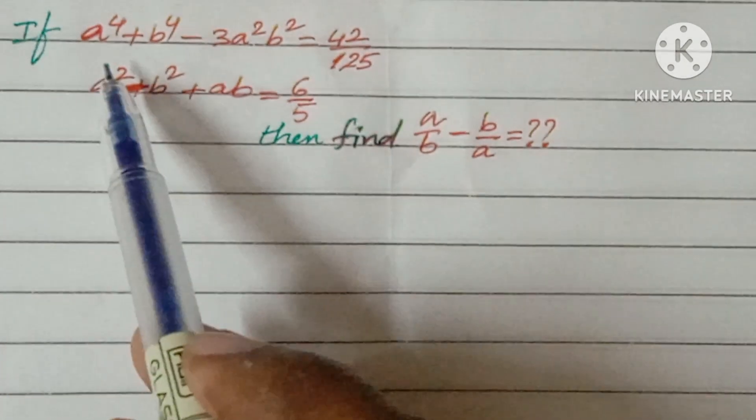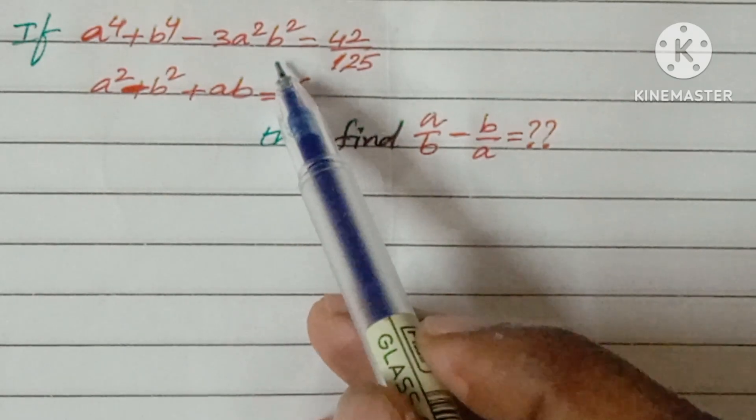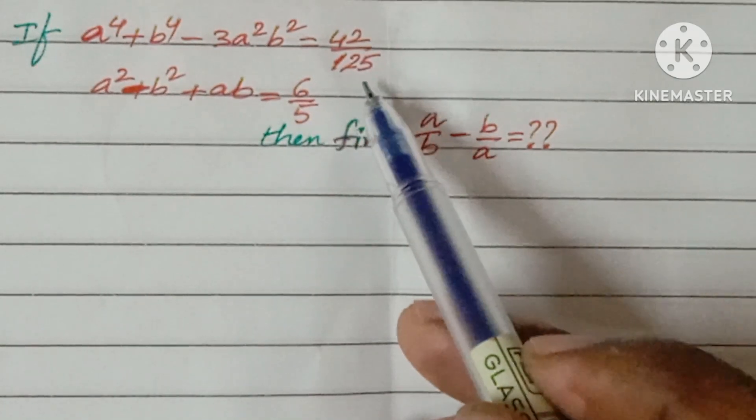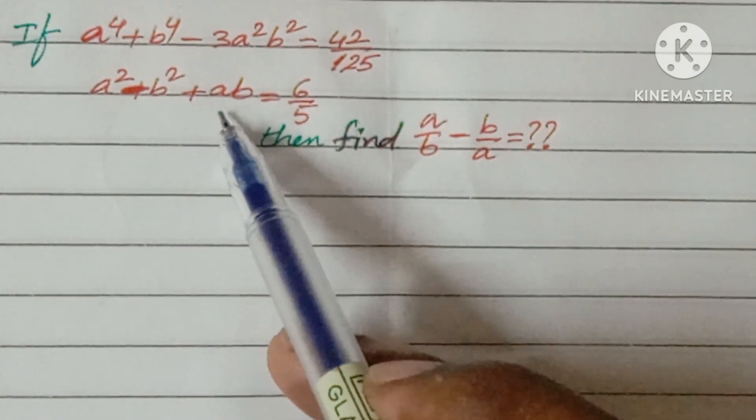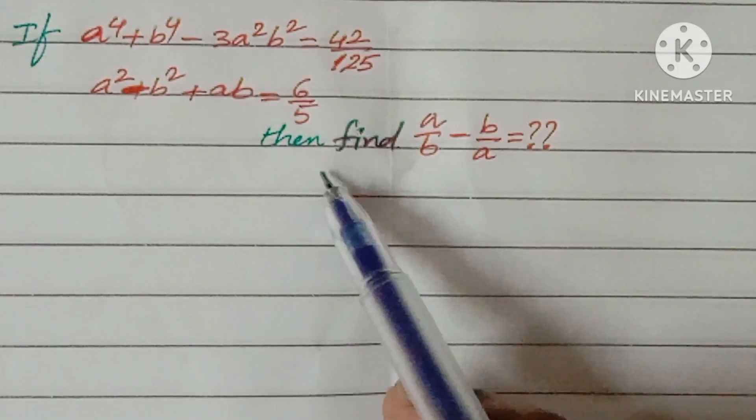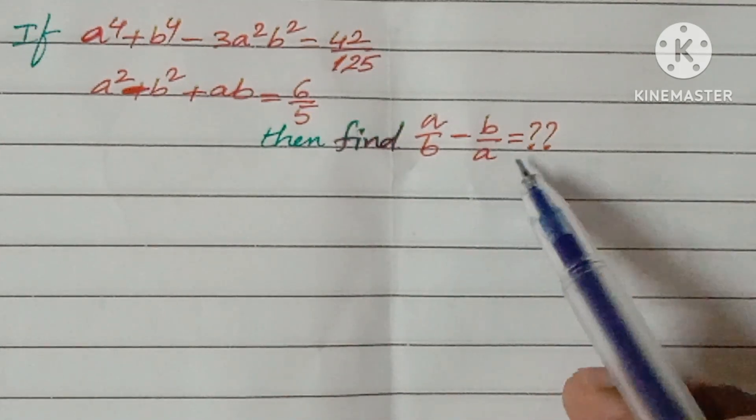The question is given: a^4 + b^4 - 3a²b² = 49/125, and a² - b² + ab = 6/5. Then find the value of a/b - b/a.